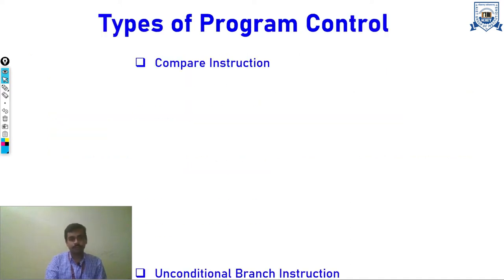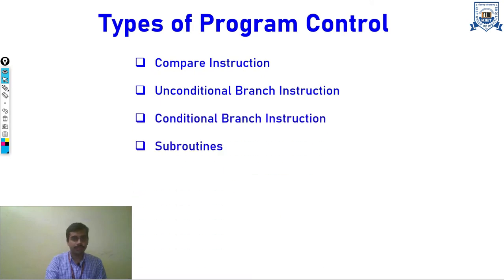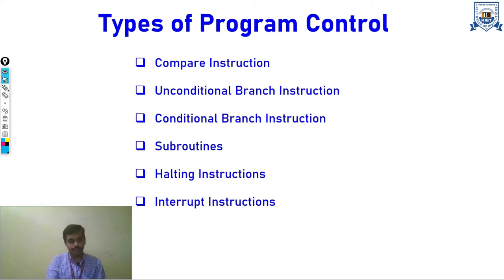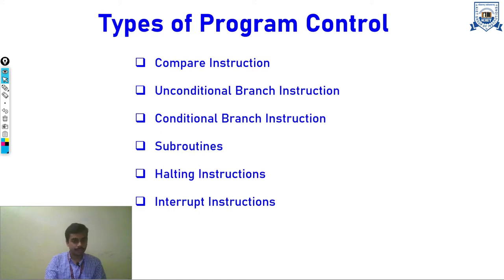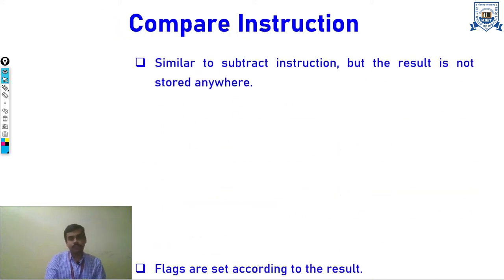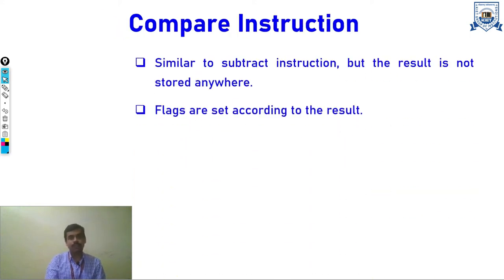Some basic types of program control used by programs are: compare instructions, unconditional branch instructions, conditional branch instructions, subroutines, halting instructions, and interrupt instructions.